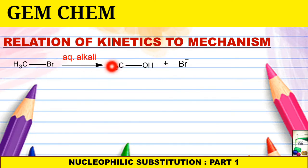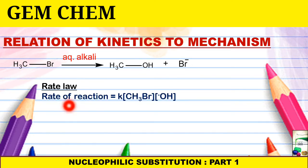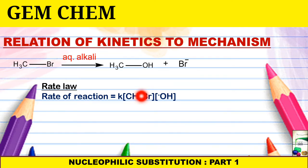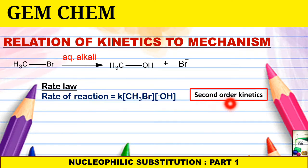For this reaction we can write the rate law in two ways. First, where we involve the alkyl halide and also the aqueous alkali containing the OH⁻ nucleophile. The rate of the reaction equals a rate constant times the concentration of CH₃Br and the concentration of OH⁻. Since two reactants are involved, this is second-order kinetics.